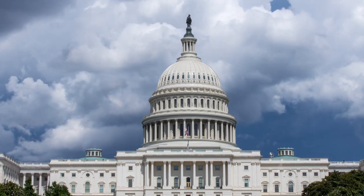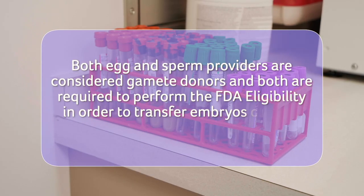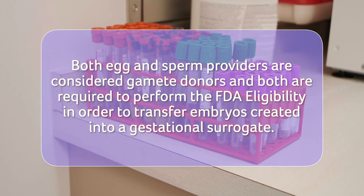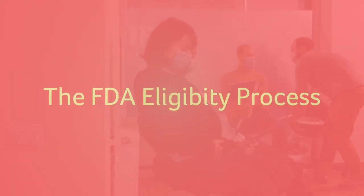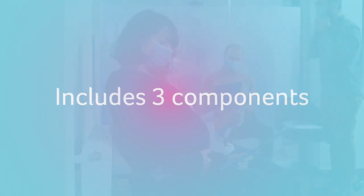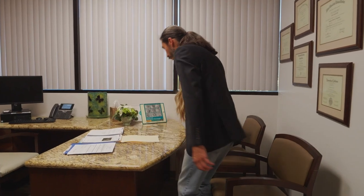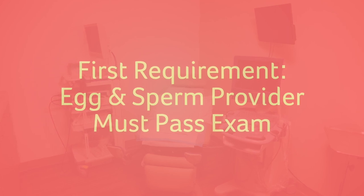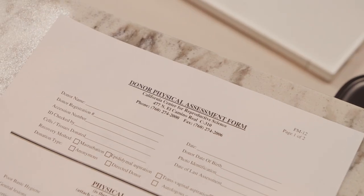As surrogacy is legal in the USA, there are certain regulations by the FDA federal government. Both egg and sperm providers are considered gamete donors and both are required to perform the FDA eligibility in order to transfer embryos created into a gestational surrogate. The FDA eligibility process includes three components. If you are coming to the USA to create your embryos, all of the FDA eligibility may be done during your visit. Since donation is regulated by the FDA here in the USA, both the egg provider and sperm provider are required to pass a medical exam, and the physician performing the examination must complete these specific forms.